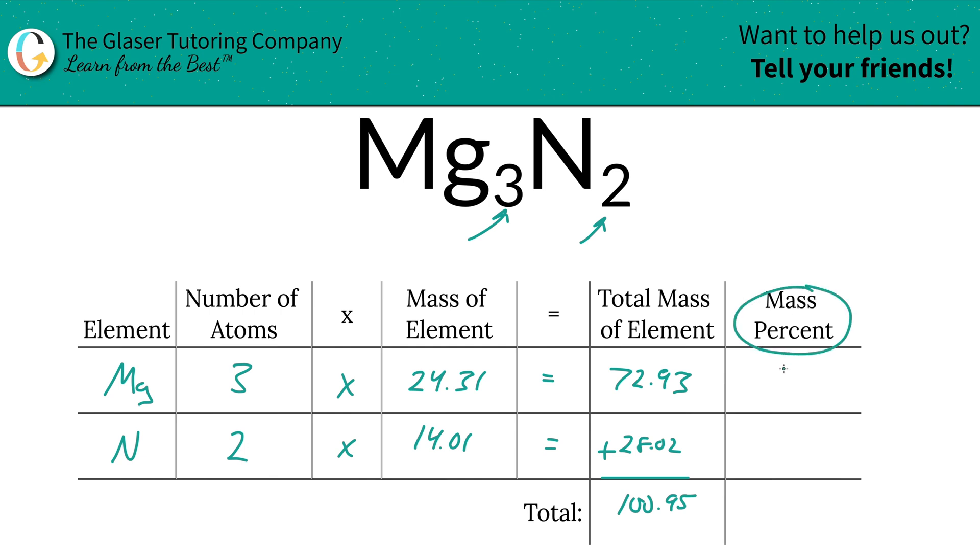To find the mass percent of each element in the compound, we're simply going to take the total mass of that element. So for magnesium here, we're going to do 72.93, and then we're going to divide it by the total mass of the entire compound, which was 100.95. Then we're going to multiply it by 100. That is a simple percent calculation: part over whole times 100. And then when we calculate this out, it works out to be 72.24%.